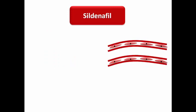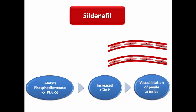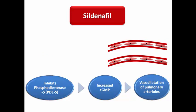Sildenafil also acts on vascular smooth muscle cells — it inhibits phosphodiesterase type 5, which is responsible for breaking down cyclic GMP, and so it increases the level of cyclic GMP, resulting in vasodilation of the penile arteries. That's why the most famous use for sildenafil is for erectile dysfunction. We call this drug family the phosphodiesterase inhibitors, including sildenafil and tadalafil. Another famous action of sildenafil is vasodilation of the pulmonary arterioles, making it a key treatment for pulmonary arterial hypertension.